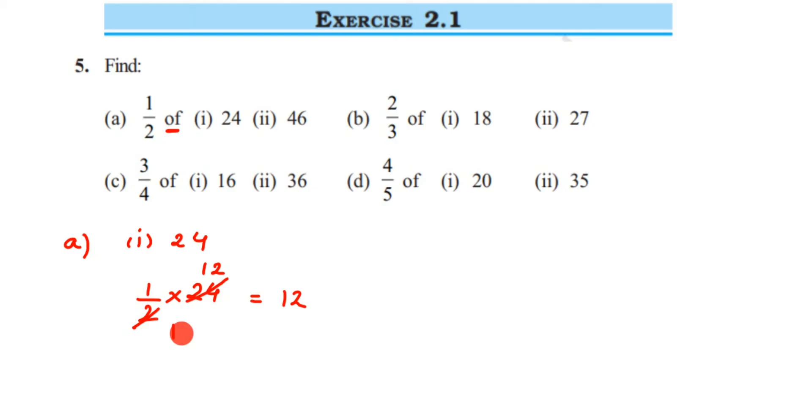Then the next one we have is 46. So 1/2 of 46. Again, 46 is an even number, we can cancel this in two table: two ones are two, two twos are four, two threes are six, so it will be 23.